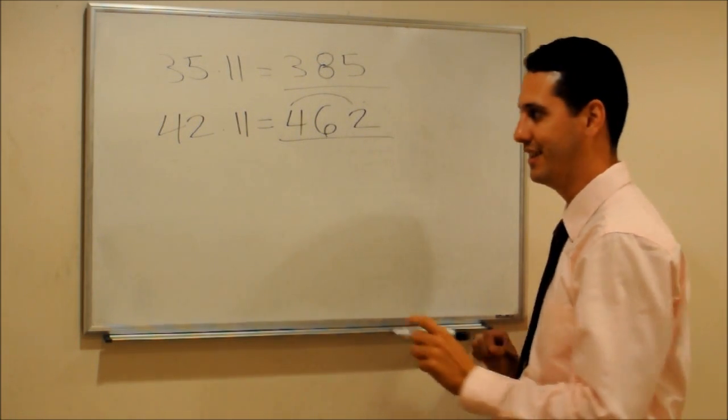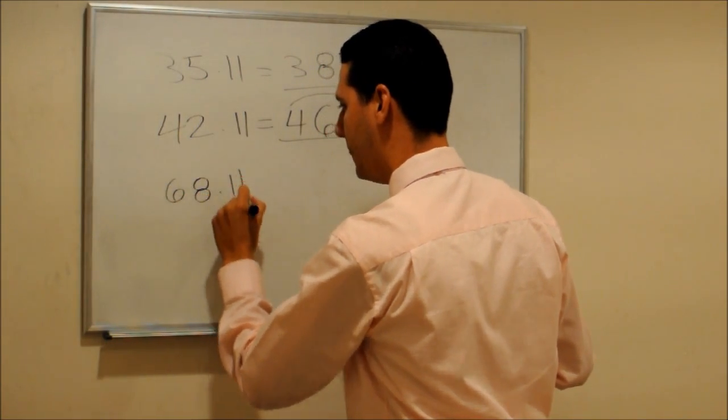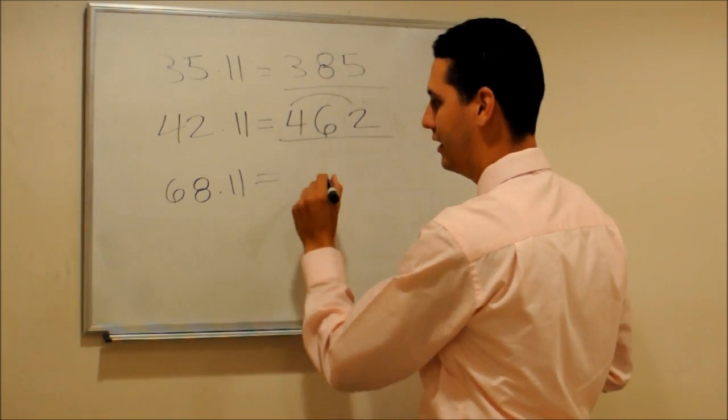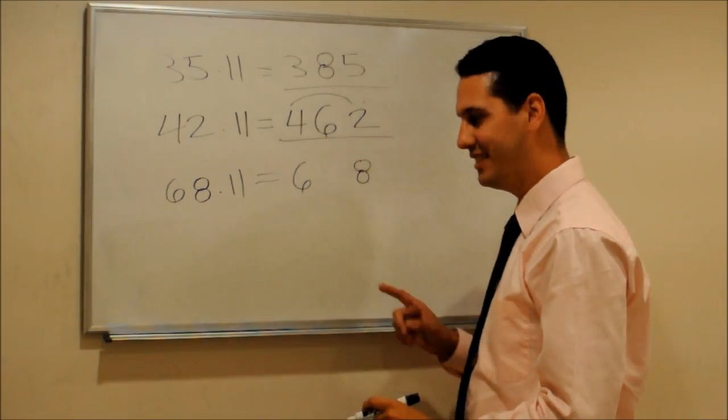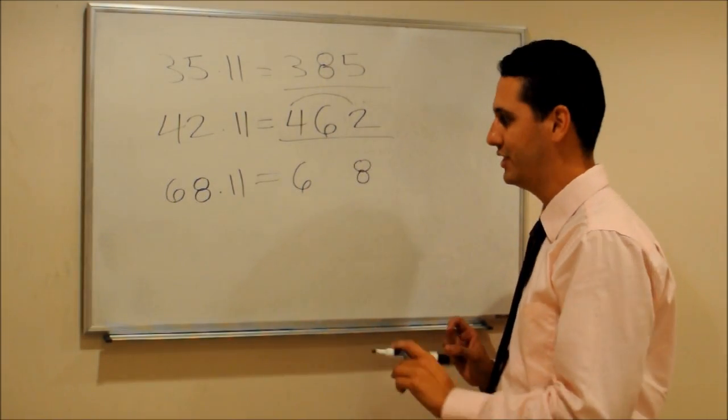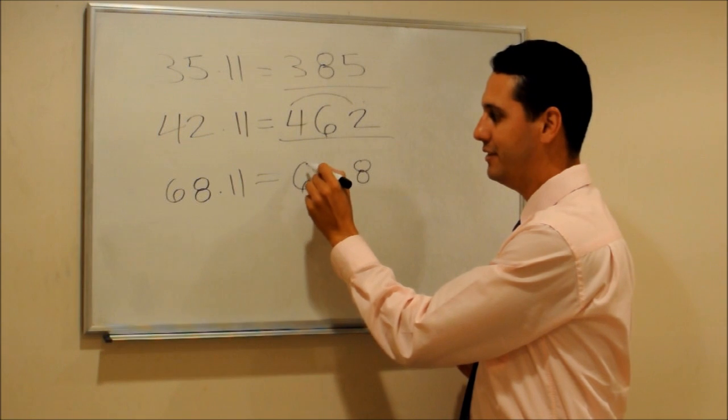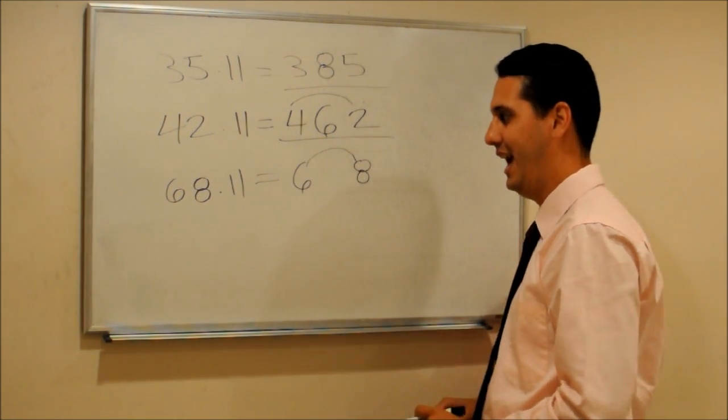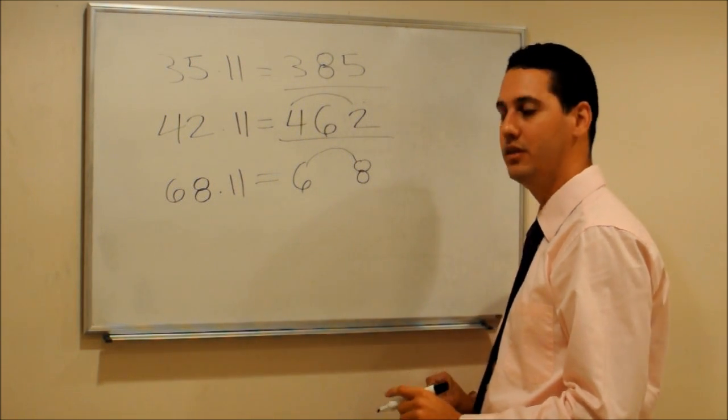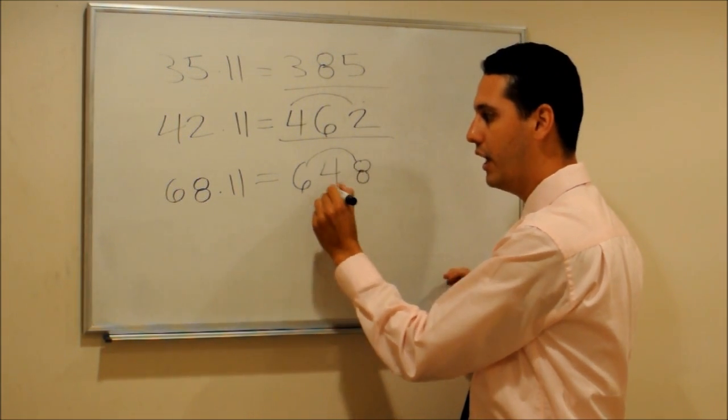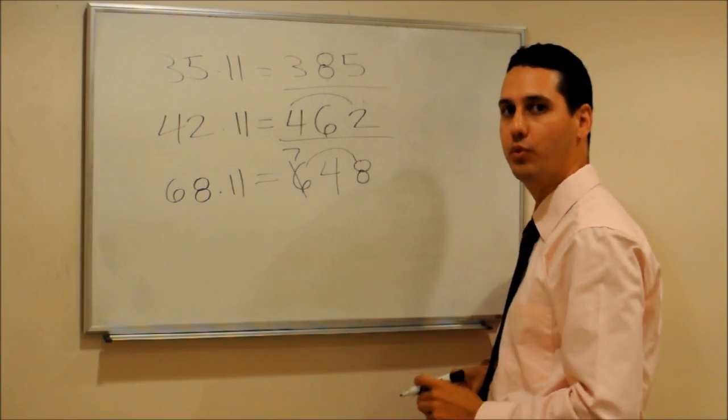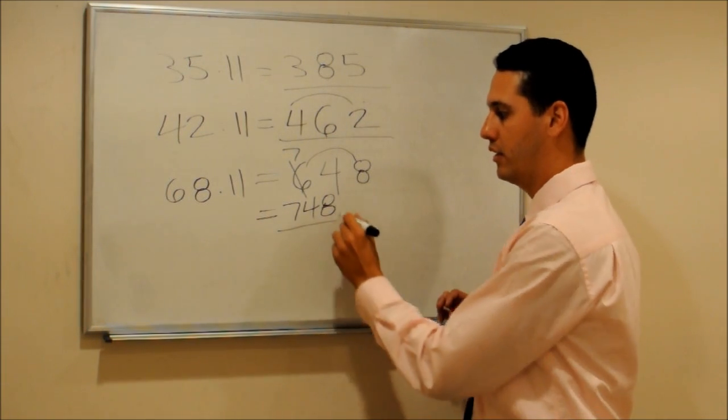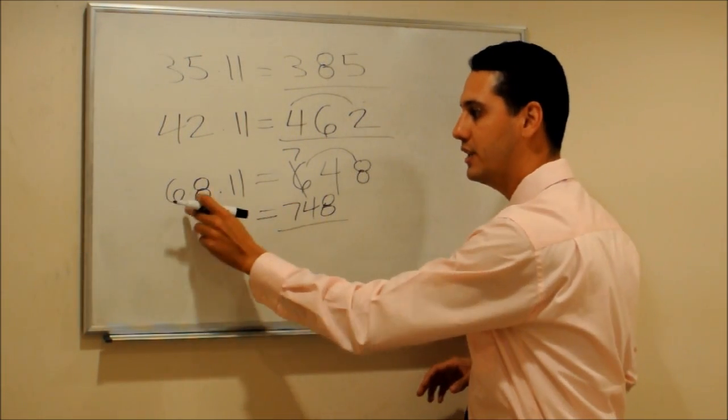One more time. 68 times 11. 6, 8. This is a different case, because what happened here is that 6 plus 8 is 14. So you have a 2-digit number, and you can't write a 2-digit number in the middle. So instead of writing 14 in the middle, you say 4, and you add 1 to the previous one. So the answer will be 748. That's the answer of 68 times 11.